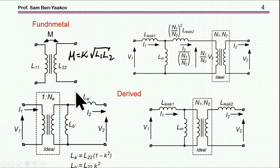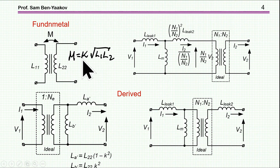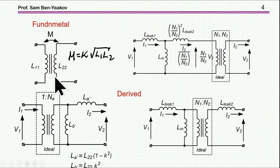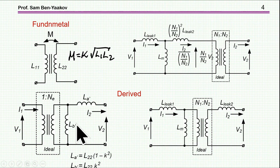In the referenced video, I showed and proved that the very basic model of a transformer is the coupled inductor. For an ideal transformer, k equals 1; for other transformers it can be smaller than 1. I've shown that once you have this fundamental model — which comes from textbooks and physics — you can transform it to any one of these networks, and in fact to an infinite number of networks of different configurations, provided you do the transformation correctly.